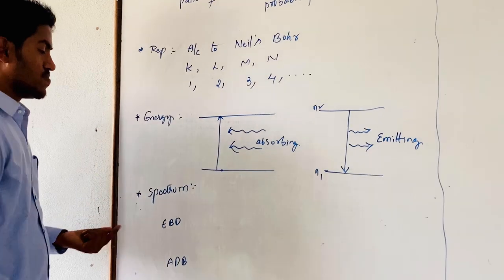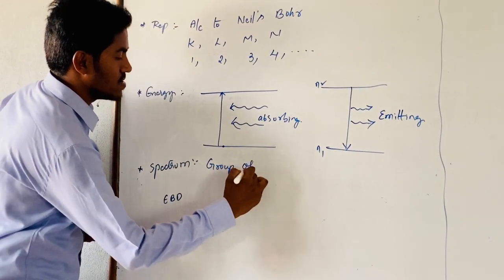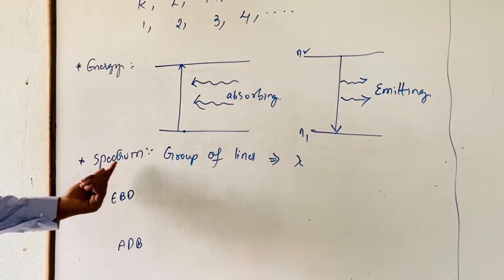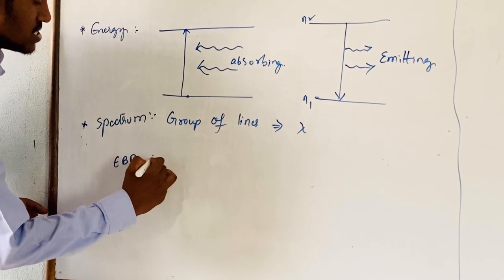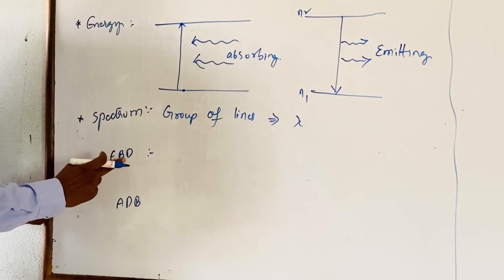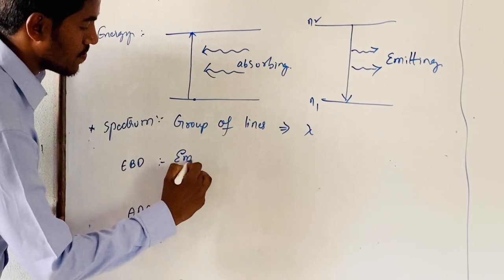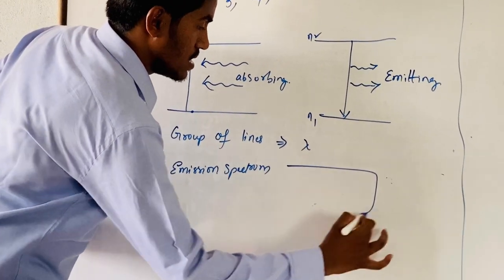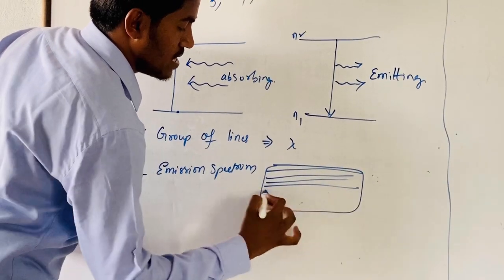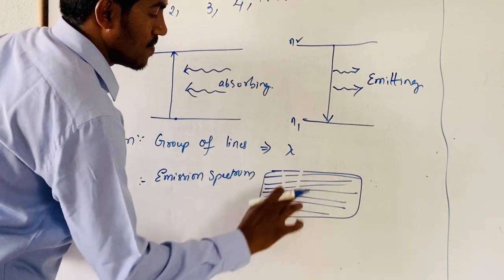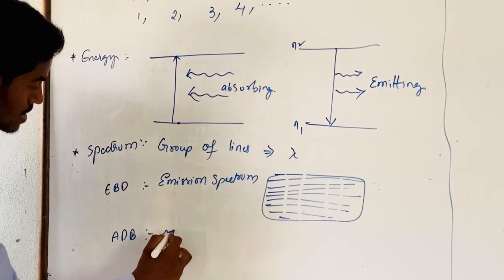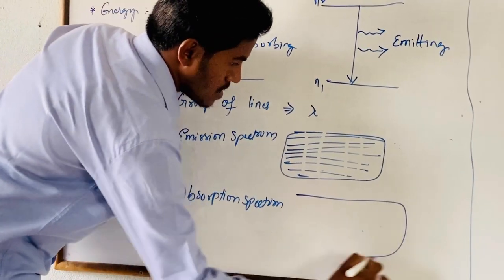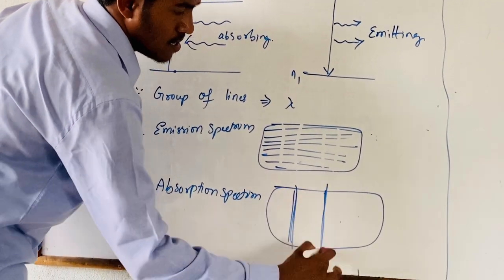What is called a spectrum? Spectrum represents a group of lines with a certain wavelength, represented by the symbol lambda. Spectrum may be classified into two types: emission spectrum, represented by bright lines on a dark background, and absorption spectrum, represented by dark lines on a bright background.